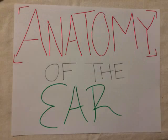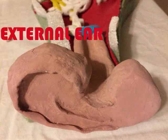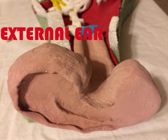Anatomy of the Ear. The ear is divided into three separate parts. The first is the external or outer ear. The outer ear is the outer fleshy and cartilaginous auricle that surrounds the auditory canal.